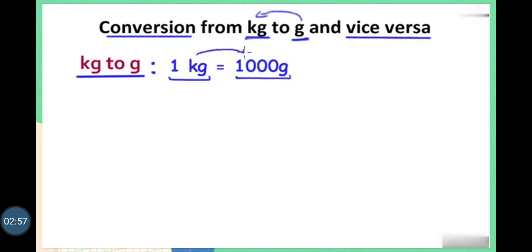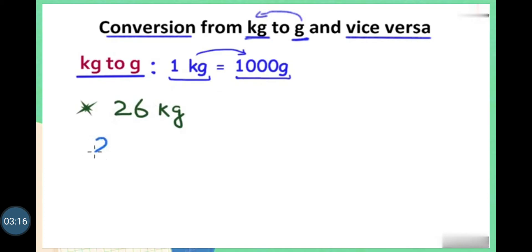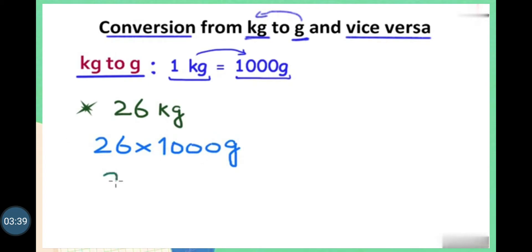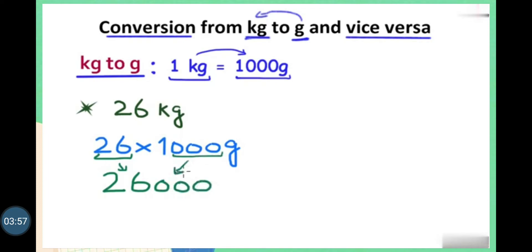We know that when we convert the bigger unit to the smaller unit, we always multiply. Let's have one example: 26 kilograms. We have to convert 26 kilograms into grams. So to convert 26 kg into grams, we multiply 26 by 1000. To multiply any whole number by a multiple of 10, you write the whole number and then add the zeros from the multiple of 10. So this will be 26,000 grams.